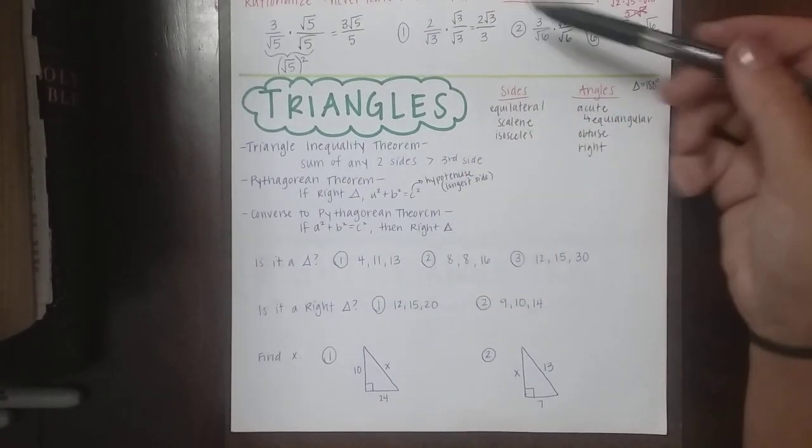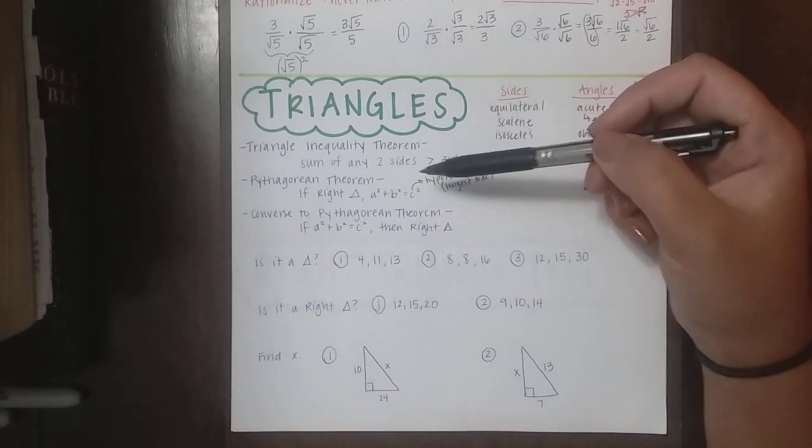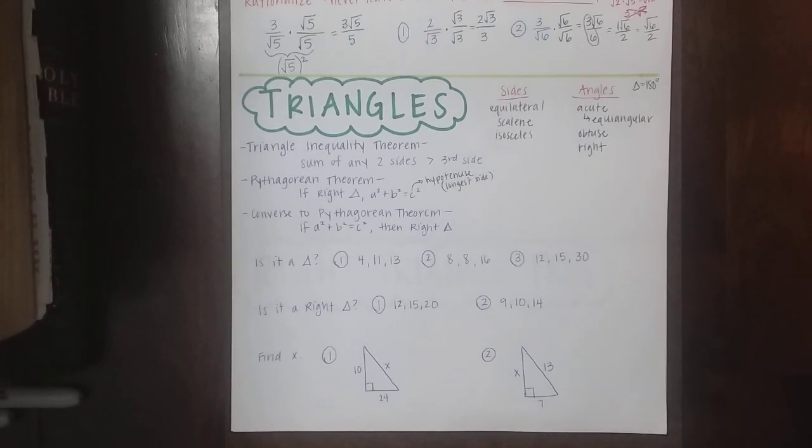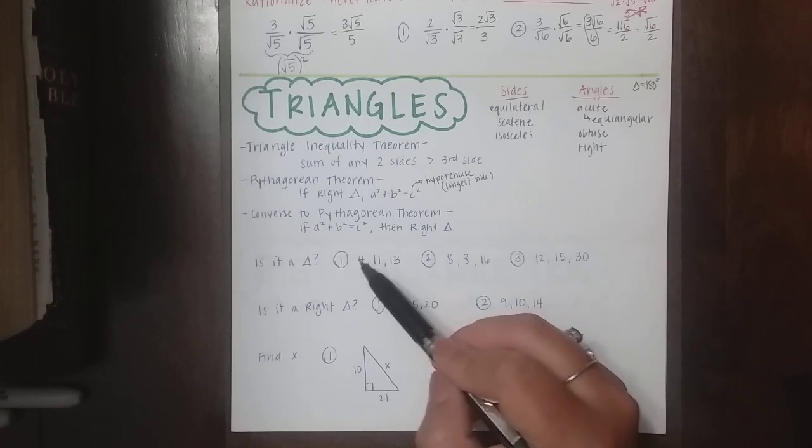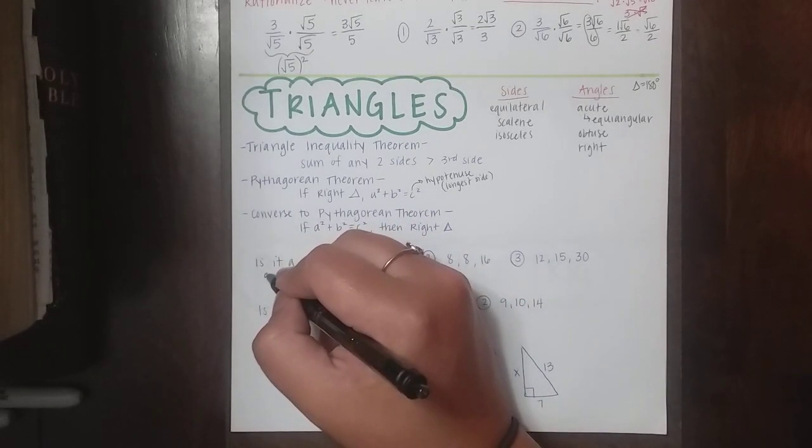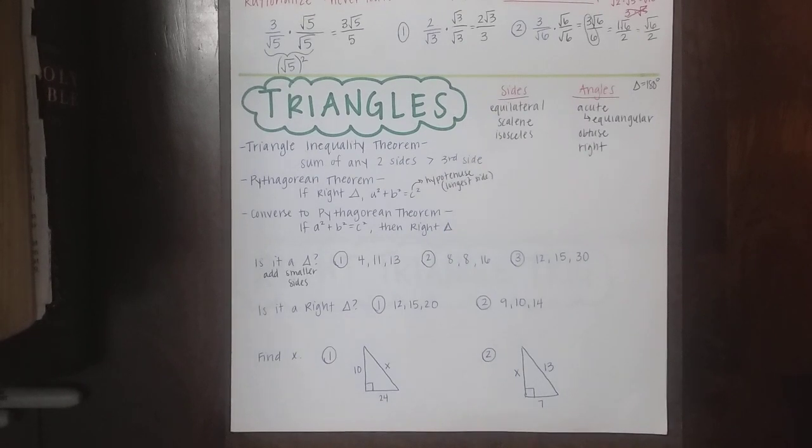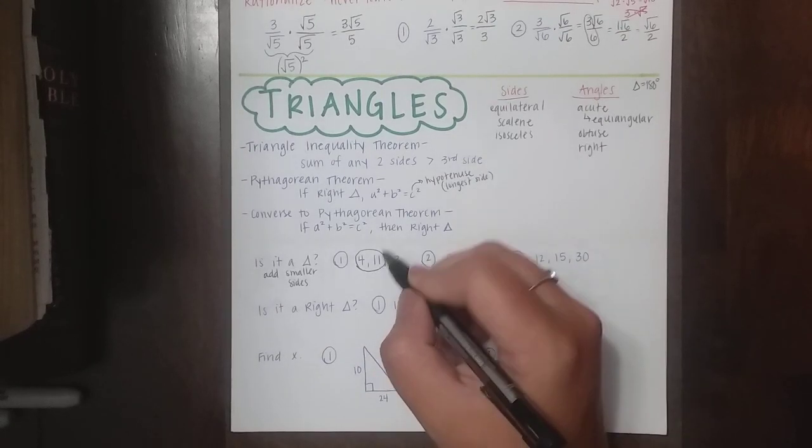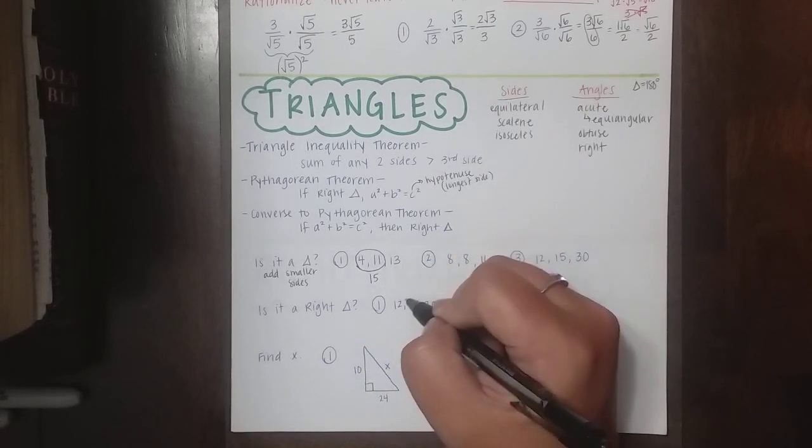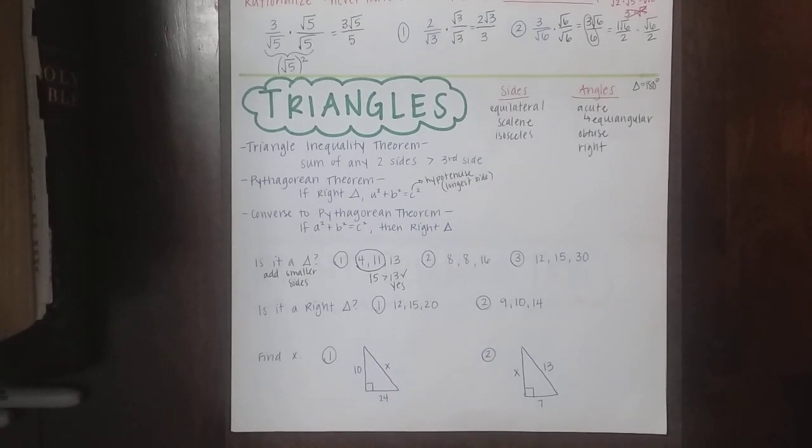So you've got three types of questions here. The first round is just asking if it's a triangle. So that goes back to the inequality theorem. I'm going to test to see if it is a triangle. Now, instead of having to do 4 plus 11, and then 11 plus 13, and 4 plus 13, if you just add the two smaller sides. The two smaller sides are the ones that we can use to check. So that means I'm going to add these two together. Well, 4 plus 11 is 15, and 15 is greater than 13. So yes, those sides make up a triangle.